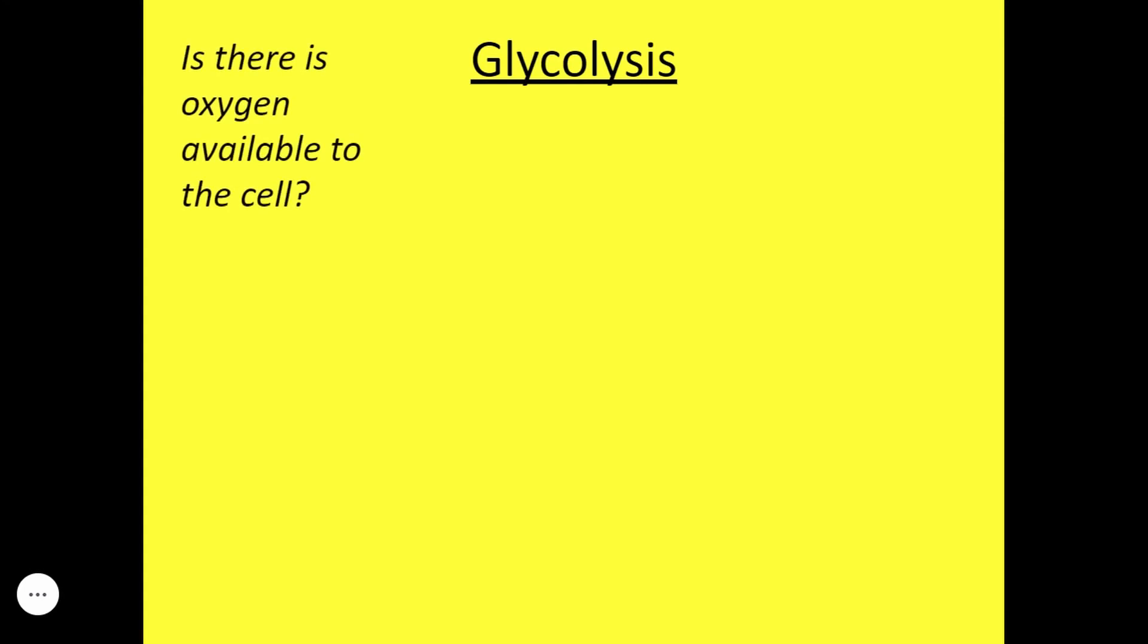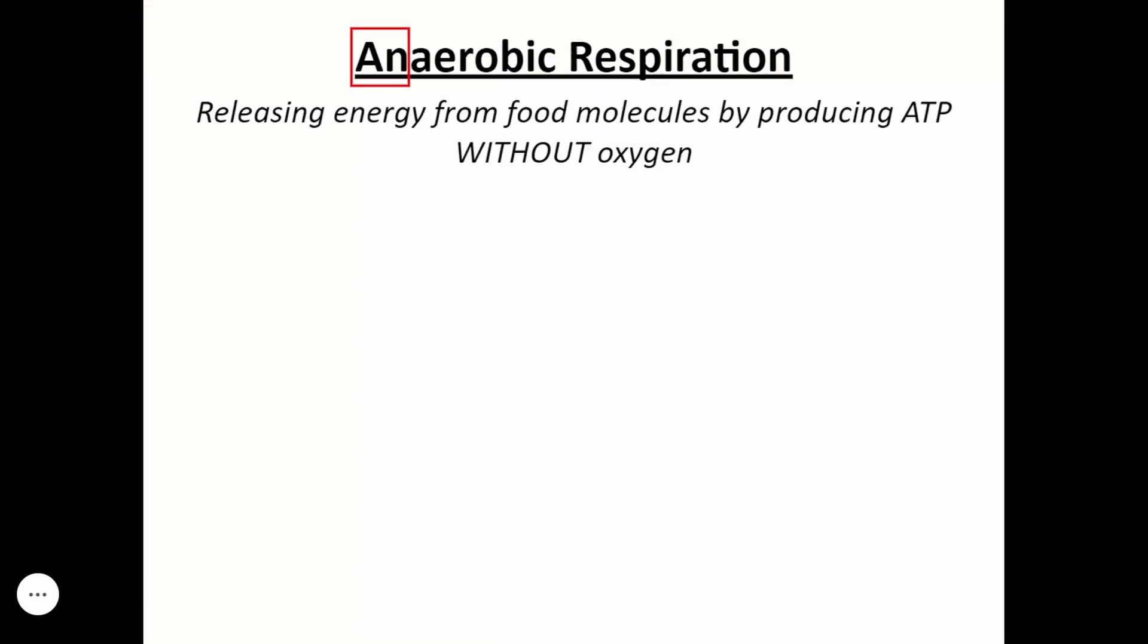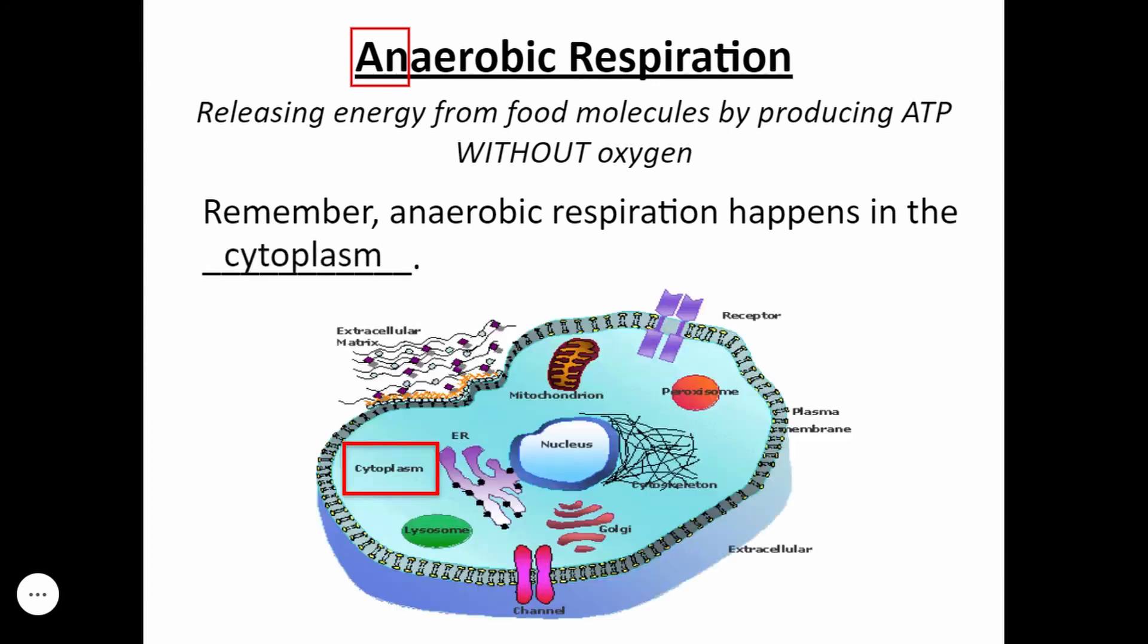So what happens if it's the other situation where there's no oxygen? Remember, after glycolysis, the cell thinks, is there oxygen available? If yes, we do the steps that we just did, aerobic respiration. If no, we have to move into anaerobic respiration. In anaerobic respiration, this is releasing energy from food molecules without oxygen. Anaerobic respiration happens in the what? Where do anaerobic processes take place? If you said cytoplasm, you are correct. Remember, in a cell, this is going to take place in the cytoplasm, so outside of the mitochondria.